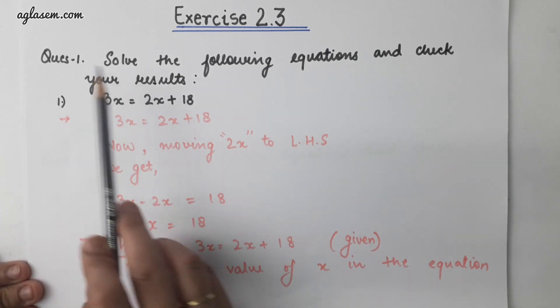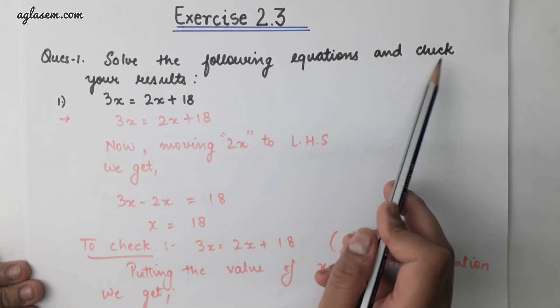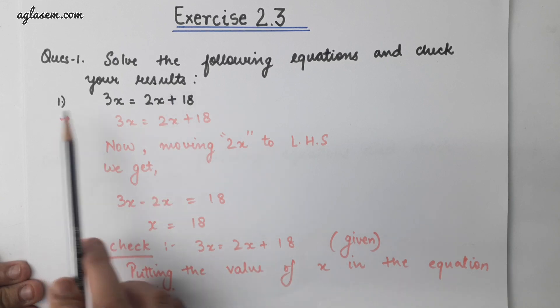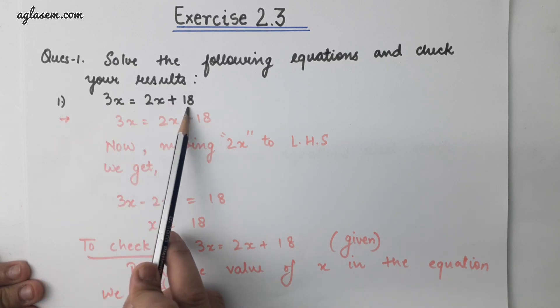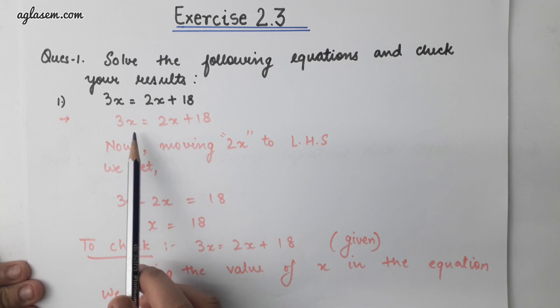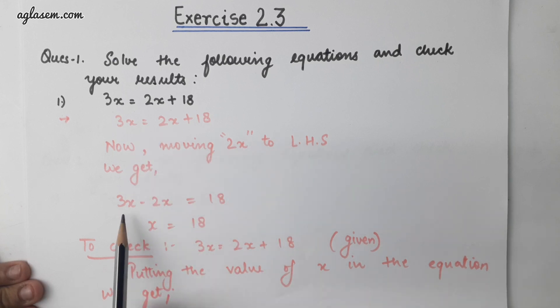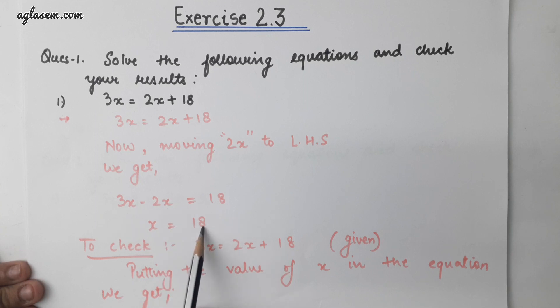Question number 1: solve the following equation and check your result. First part is 3x equals to 2x plus 18. Moving 2x to LHS, we get 3x minus 2x equals to 18. So x is equal to 18.